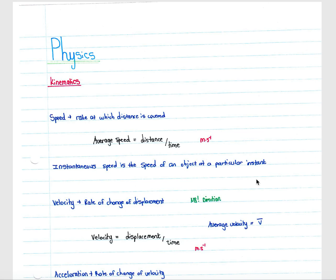We'll cover the kinematic section of the physics syllabus. The most fundamental thing you need to know is the difference between speed, velocity, and acceleration. Speed is the rate at which distance is covered — it looks at the total amount of ground an object has covered, which we call distance. Speed is calculated as distance divided by time. Speed is a scalar quantity, so it does not have direction, and it is measured in meters per second. You must include the unit with every answer. In some instances you may be asked for instantaneous speed, which is the speed of an object at a particular instant.